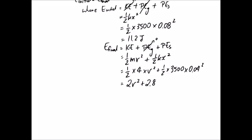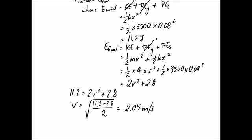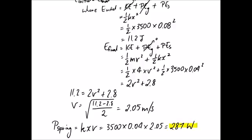And all I need to do is then work out what my unknown is, which is this v in the final equation. So we know that initial has to equal final. So 11.2 equals 2v squared plus 2.8. Solving for the velocity, it comes out to be 2.05 meters per second. So I can work out now what the power in my spring is going to be in this part b scenario. Remember that it was equal to kxv. So 3,500 multiplied by x, which is 0.04 in meters and multiplied by 2.05. And it comes out to be 287 watts. So that's the answer for part b.